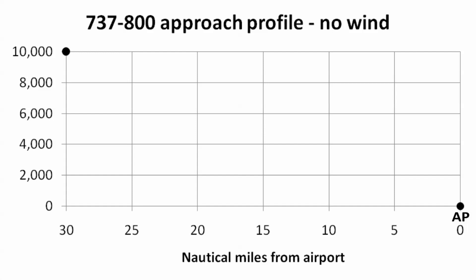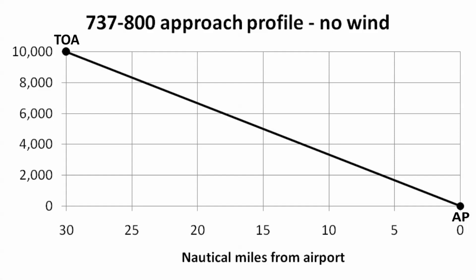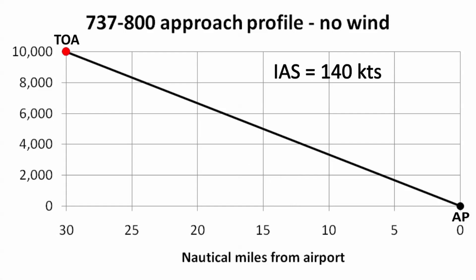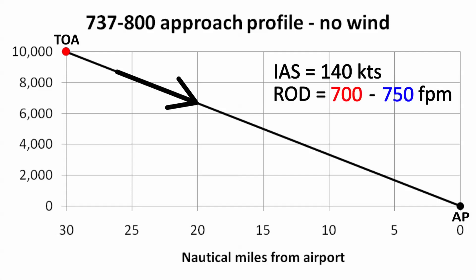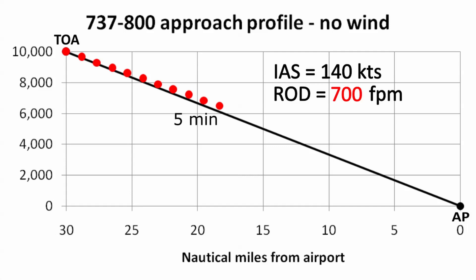I'm now going to look at the approach phase and I'll start with a clean slate, assuming for now a no wind condition. If the descent went well, then the airplane will be at an altitude of 10,000 feet, a distance of 30 nautical miles away from the airport. The elevation of the geometric approach path is 3.14 degrees, exactly the same as it was for the no wind descent. 140 knots would be a typical instrument airspeed during the approach, with a rate of descent between 700 and 750 feet per minute. I've reduced the spacing between the dots to 30 seconds so that each minute now needs two dots.